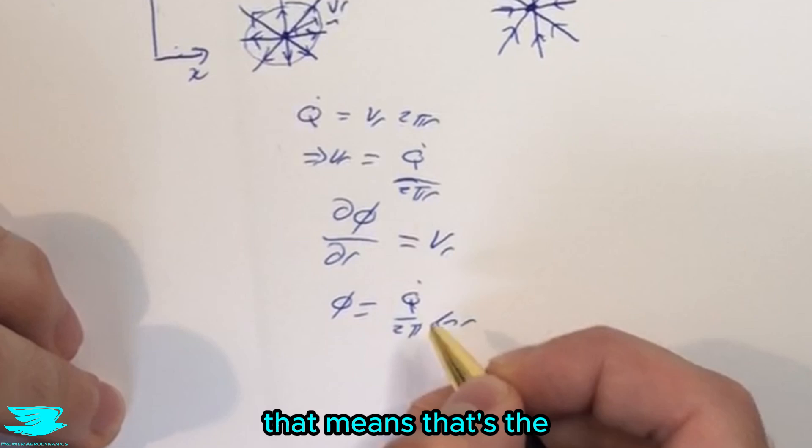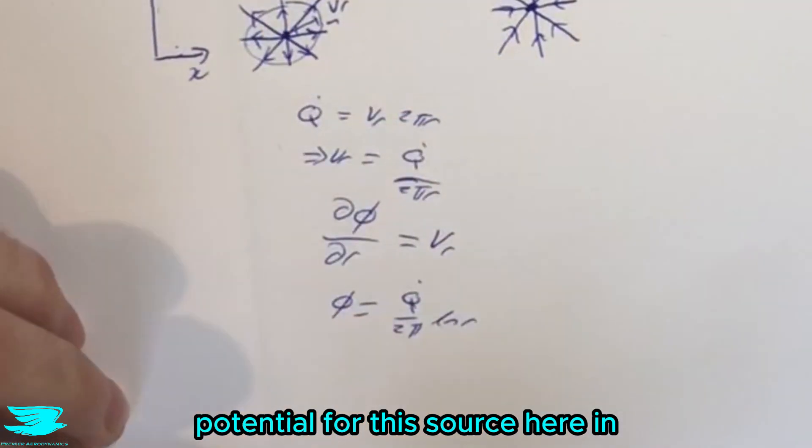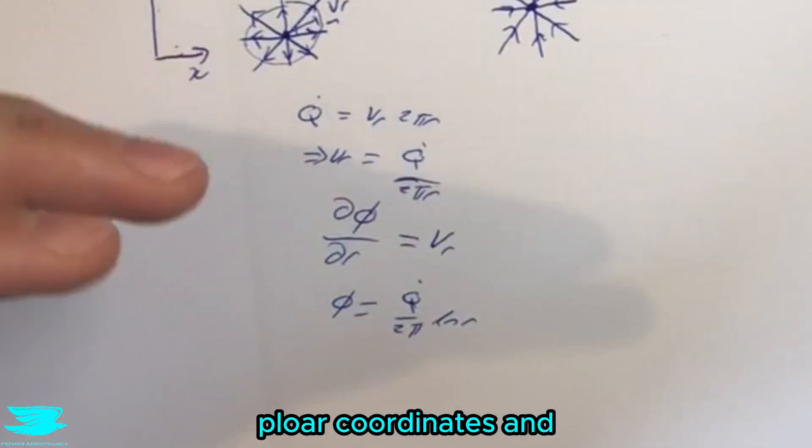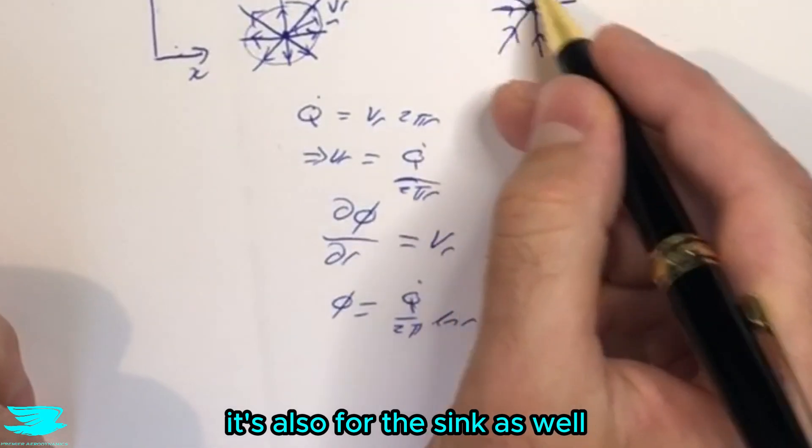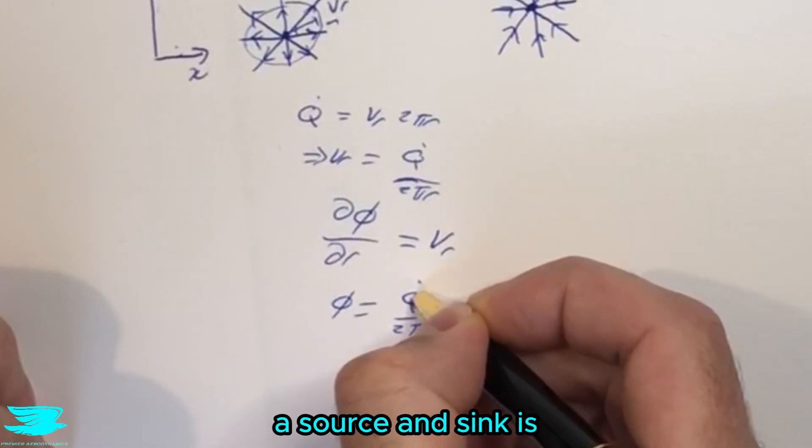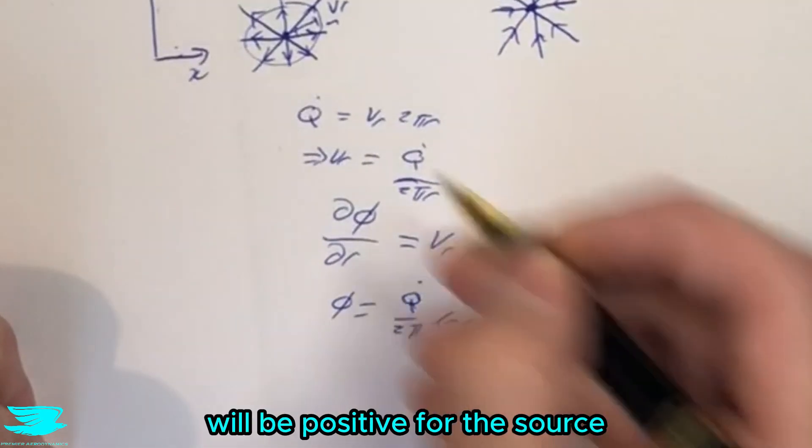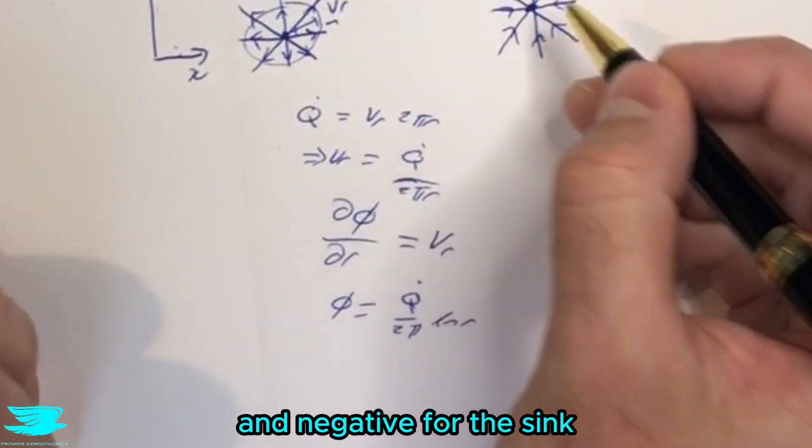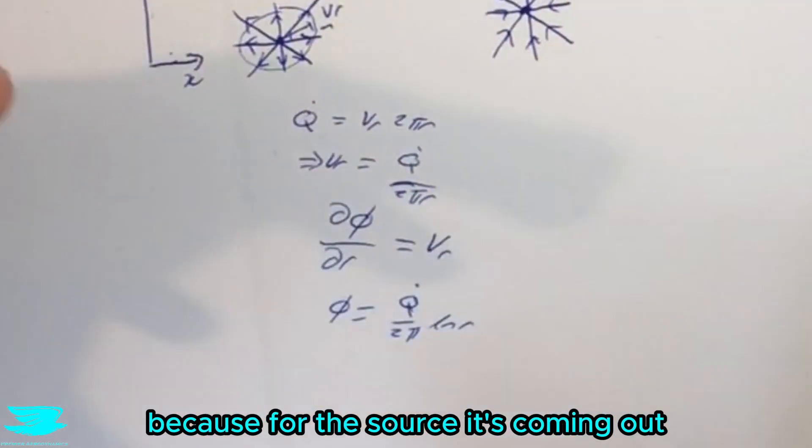So that means that's the velocity potential for this source here in polar coordinates. And it's also for the sink as well. The only difference between a source and a sink is this q dot term will be positive for the source and negative for the sink, because for the source it's coming out, for the sink it's going in.